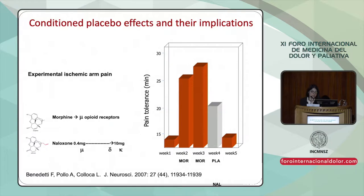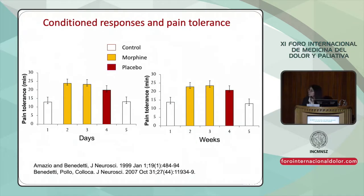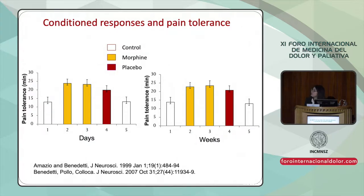La salivación es una respuesta condicionada y queríamos entender cómo crear esto en humanos. Utilizamos esto también para medir la resistencia al dolor. Podemos hacer el mismo experimento con una semana de diferencia o un día de diferencia. Vemos el control sin placebo, en amarillo la morfina y en rojo el placebo, y observamos el mismo condicionamiento inducido por el placebo y las mismas respuestas en términos de cómo se toleraba el dolor con la morfina y el placebo.